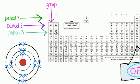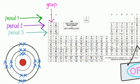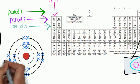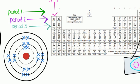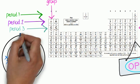Chlorine, in group 7, has the electron configuration 2, 8, 7. And then argon, in group 0, has the electron configuration 2, 8, 8.